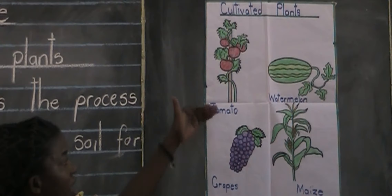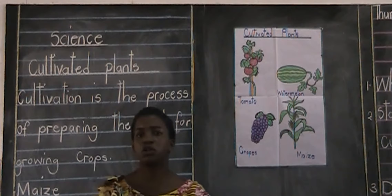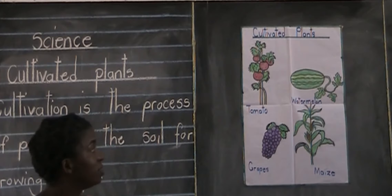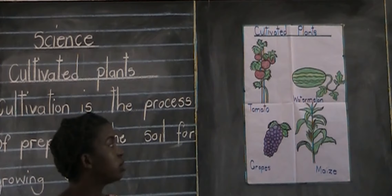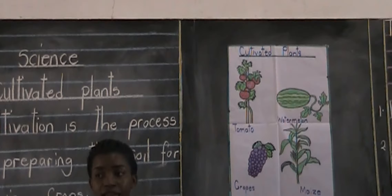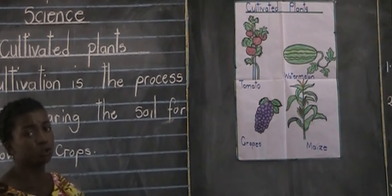Now since we looked at the examples and different types of plants on the chart, I want you to tell me why is it important for us to cultivate plants? The importance of cultivating these plants is because they produce food for us. They give us different types of food at the end of the day. When they are ready we get a variety of different types of food.